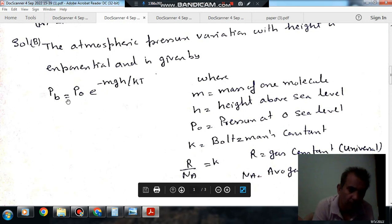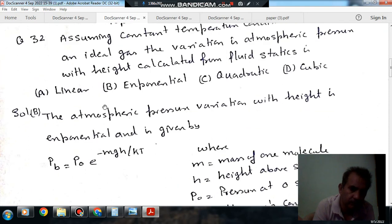So this is the variation of atmospheric pressure with respect to height, and this variation is parabolic... sorry, exponential.